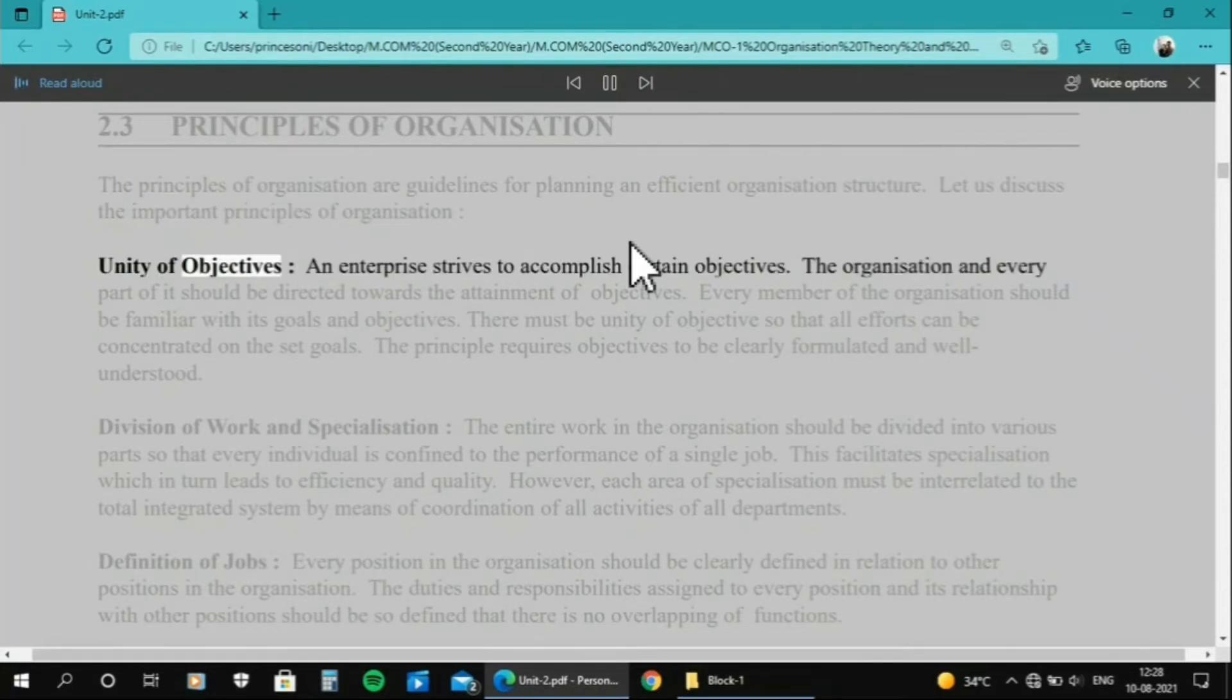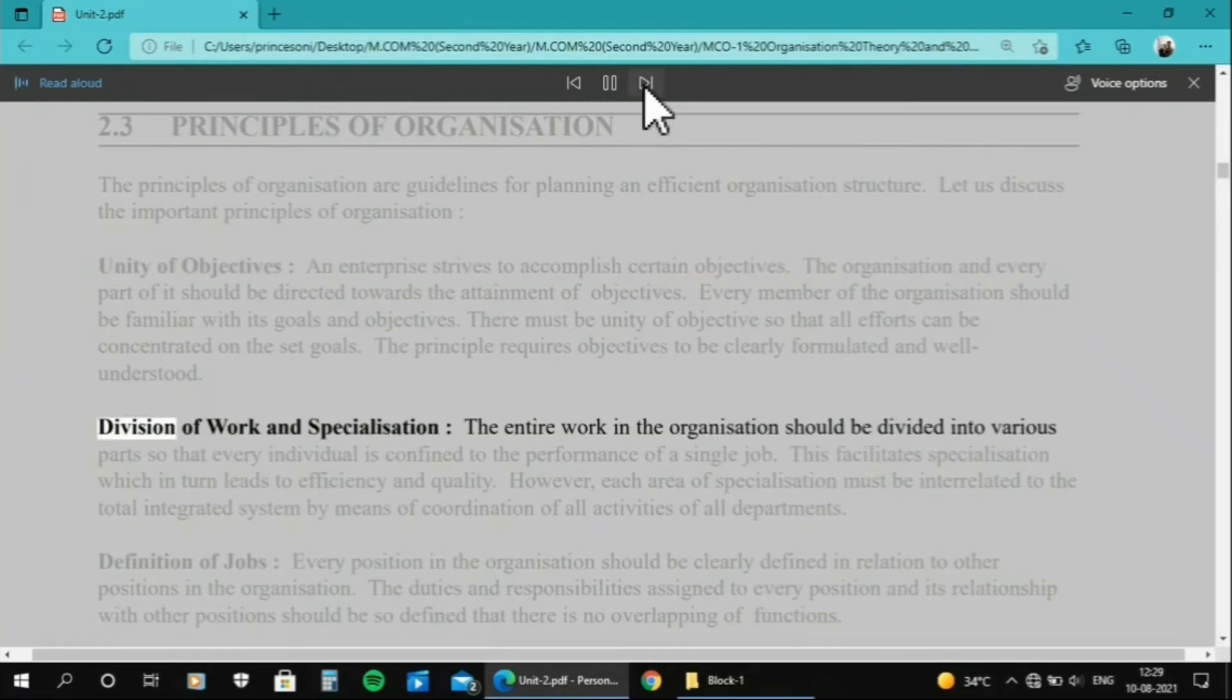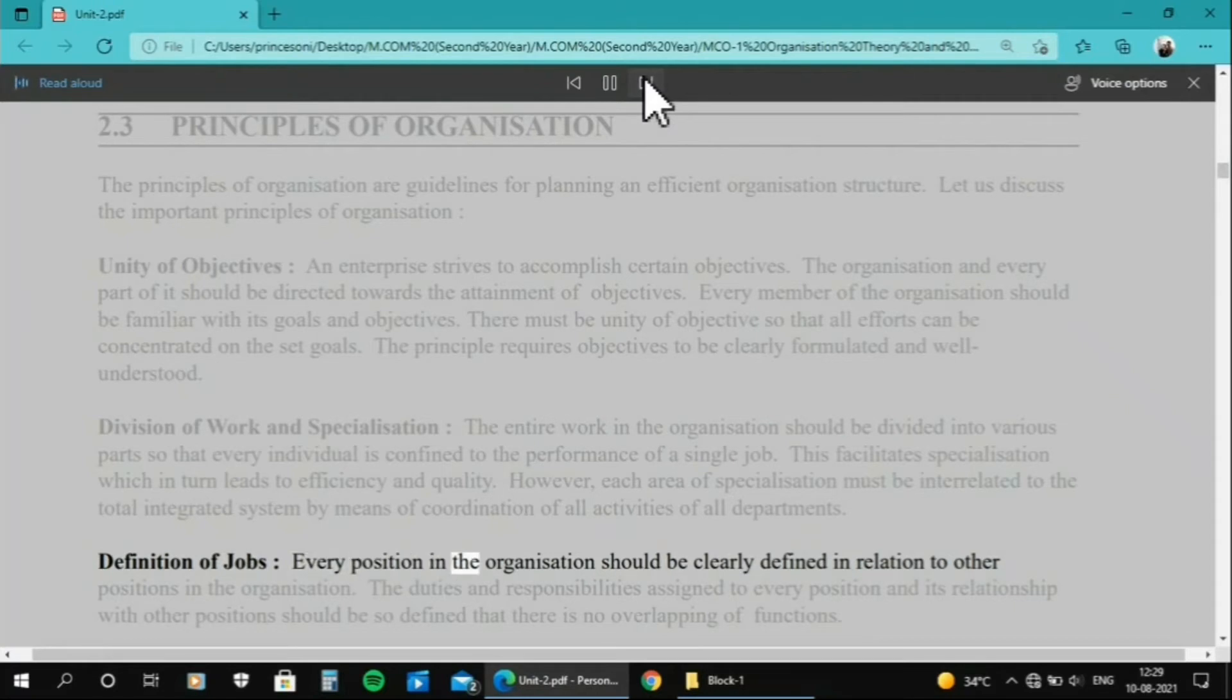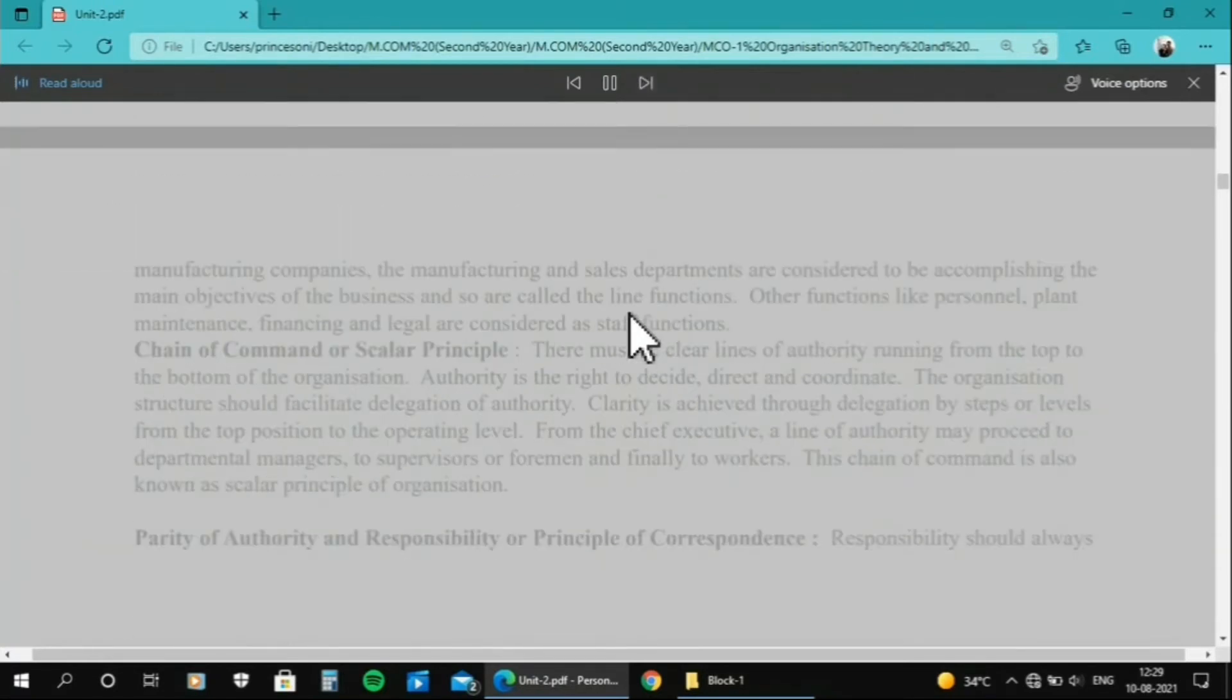Unity of Objectives: An enterprise strives to accomplish certain objectives. Division of Work and Specialization: The entire work in the organization. Definition of Jobs: Every position in the organization. Separation of Line and Staff.